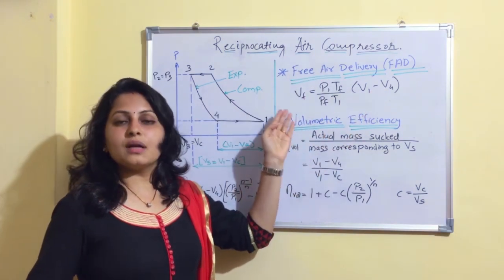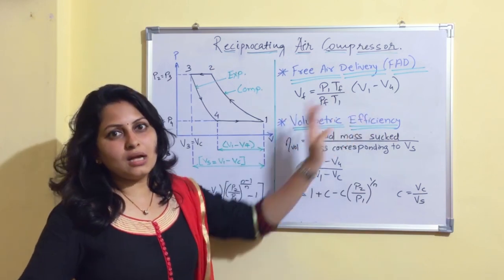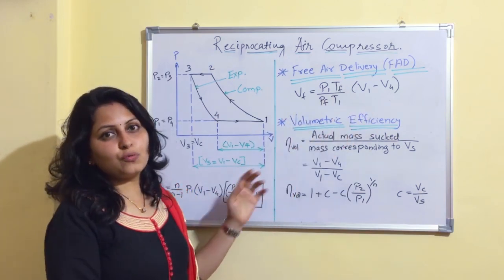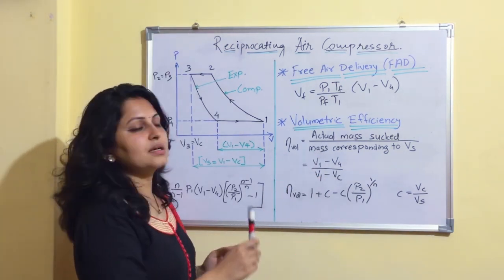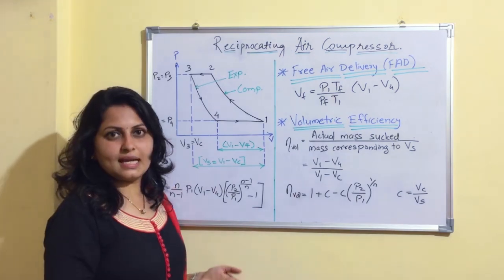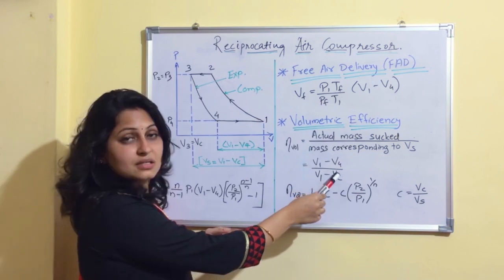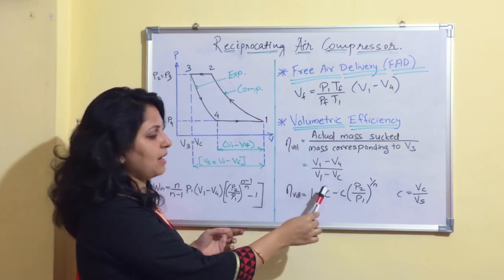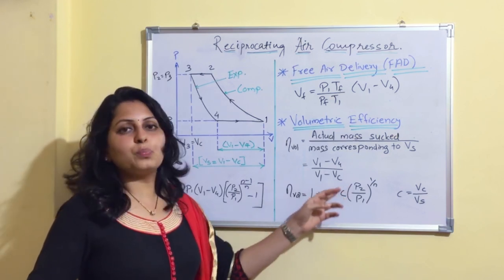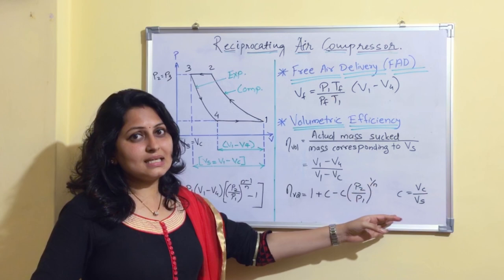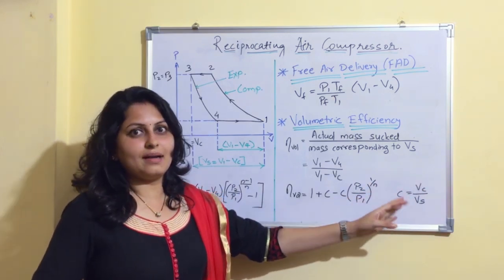Volumetric efficiency is the actual mass sucked divided by the mass corresponding to swept volume, or in short, it is the ratio of effective swept volume to swept volume: (V1 − V4) / (V1 − Vc). It can also be simplified as 1 + C − C·(P2/P1)^(1/n), where C is the clearance ratio Vc/Vs, i.e., clearance volume divided by swept volume.